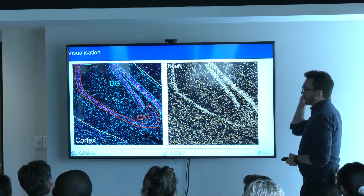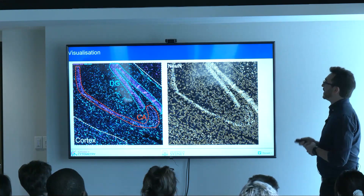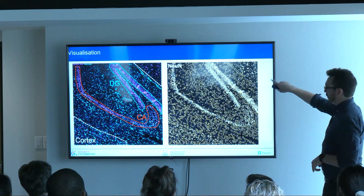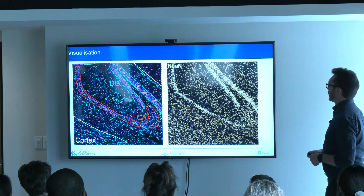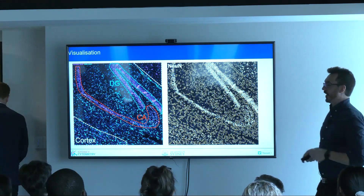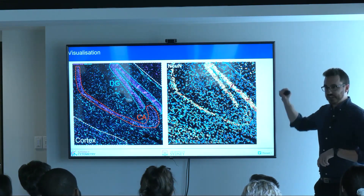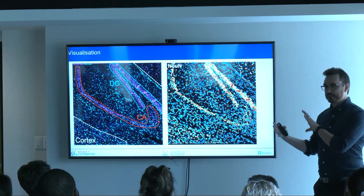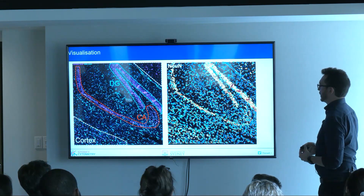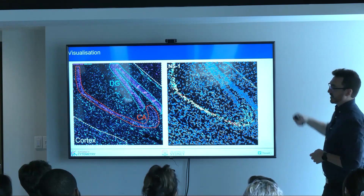Here's an example dataset from mouse brain — a mouse infected with Zika virus, a mosquito-borne flavivirus. We're looking at a section of the hippocampus. NeuN here is a marker for neurons. The white is the expression of NeuN, and the yellow boundaries are the cell masks we created. If we turn this into cellular data, each cell is represented by a dot — we opted for positional data rather than shaped polygons.